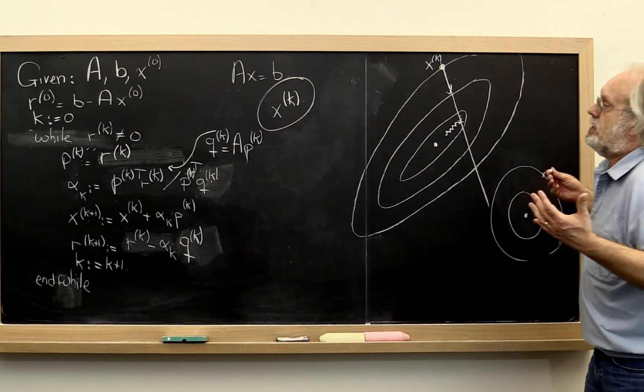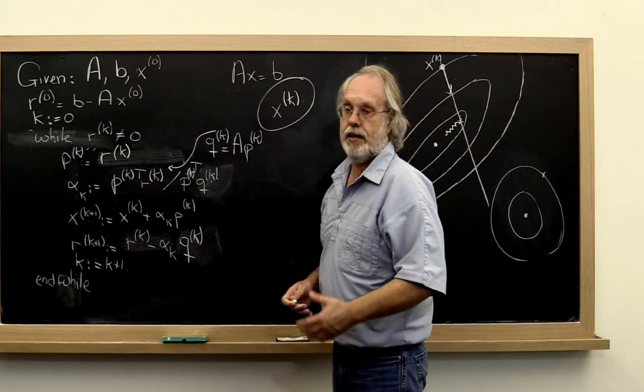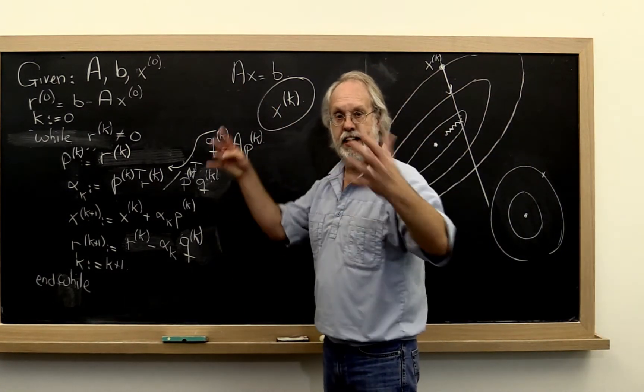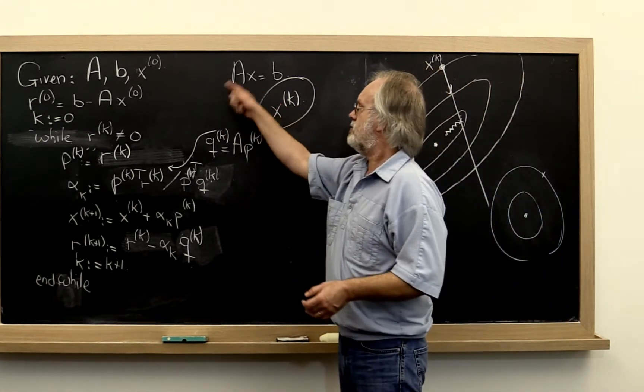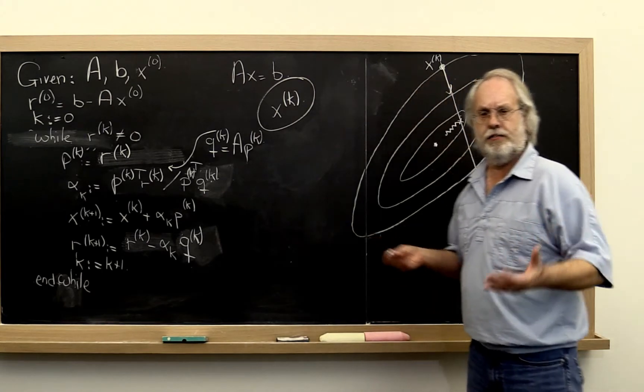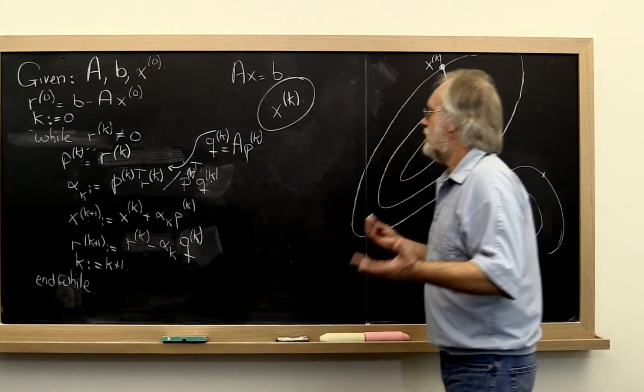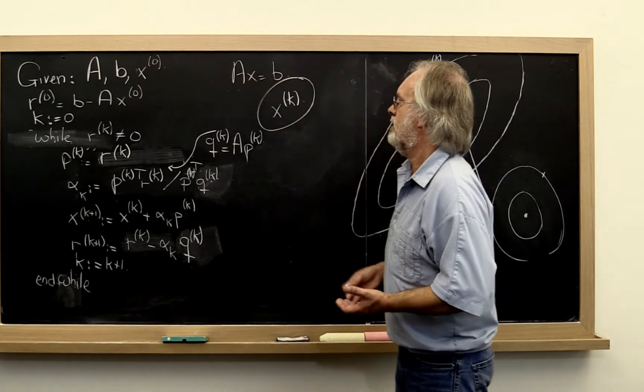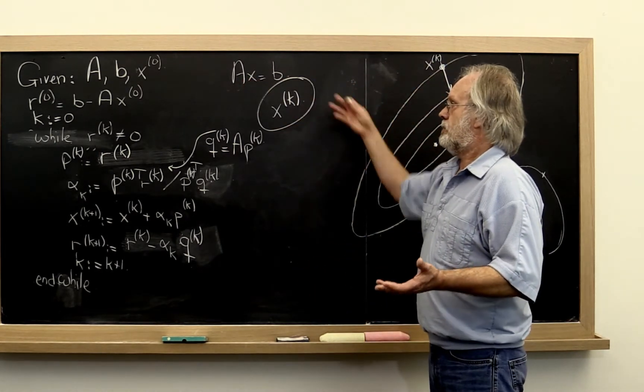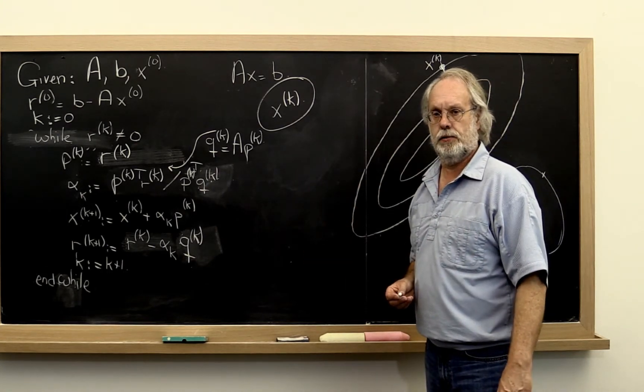Now we can say, we have a nice method for the case where A is the identity. Because obviously the identity has nice circular contours and so does any constant times the identity. But that's not very interesting. What instead we want to do is say, isn't there some way of transforming A or Ax equals B into something that has a matrix that has much nicer properties?